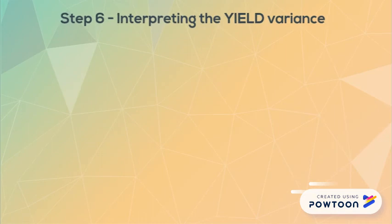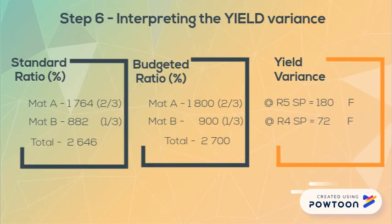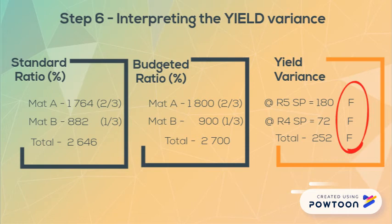To decide on the direction for the yield variance, we treat it the same way as the volume variance. For material A, based on actual information we used 1700, but in the budget we should have used 1800, which gives us a favourable variance because we used less. The same applies for material B.